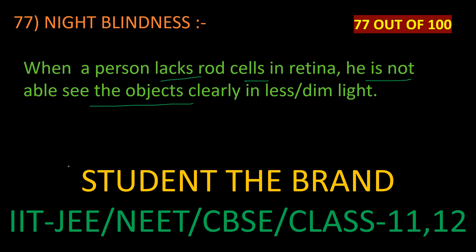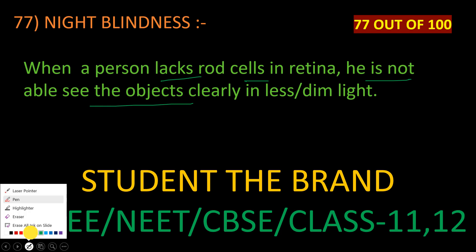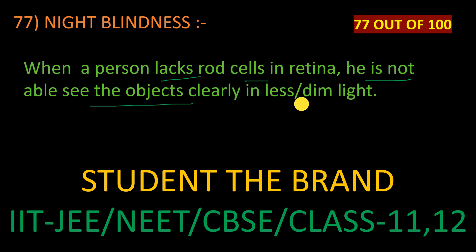see objects clearly in low light, dim light, or in the night time. So if the rod cells are less, you can't see objects in the night time. This is about night blindness.